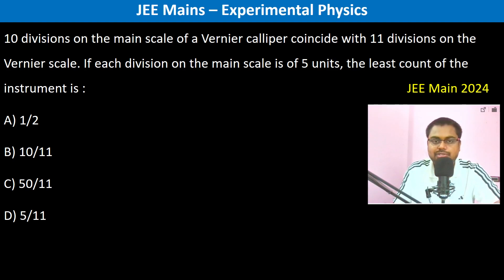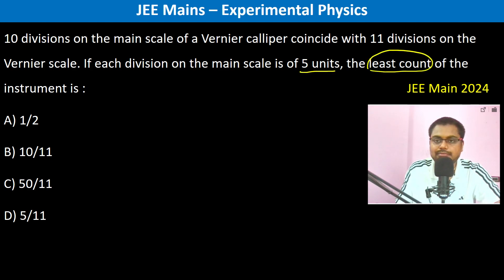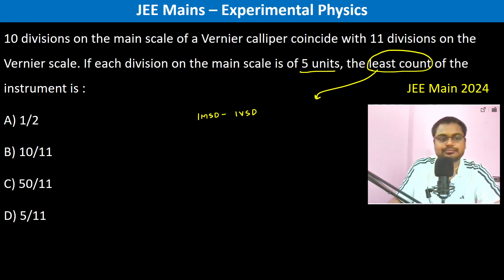10 divisions on the main scale of a Vernier caliper coincide with 11 divisions on the vernier scale. Each division on the main scale is 5 units. The least count is given by: 1 main scale division minus 1 vernier scale division.